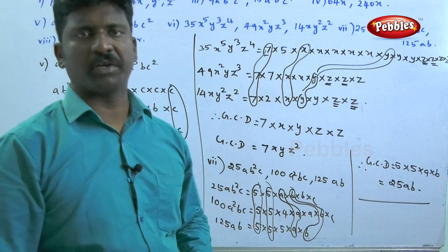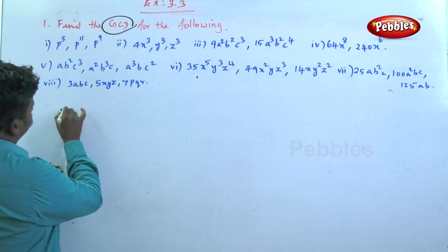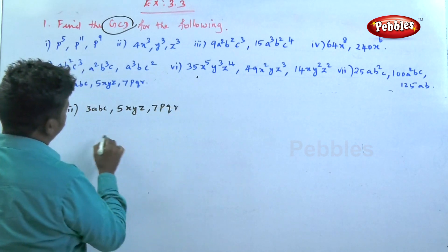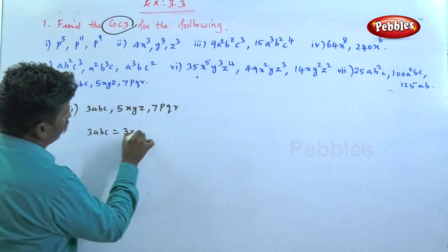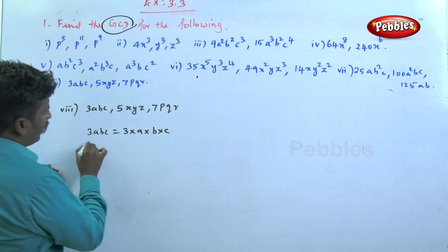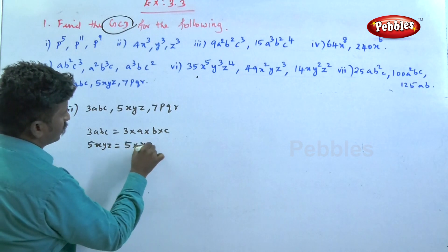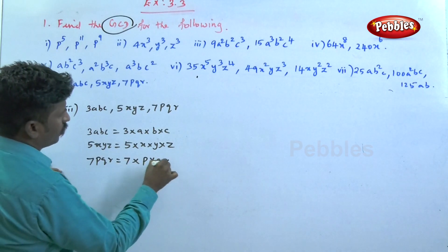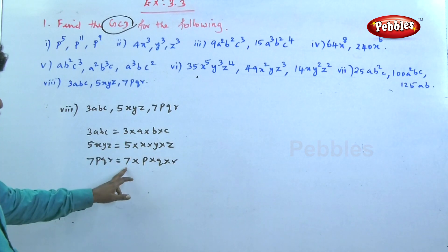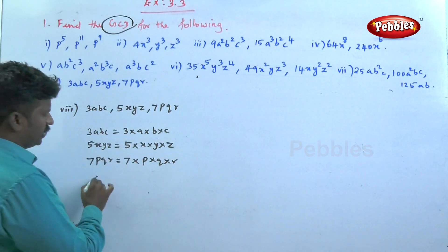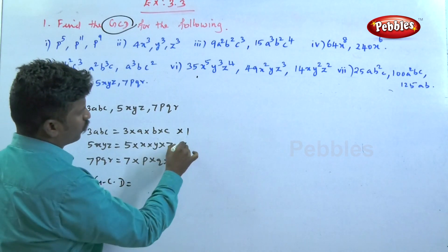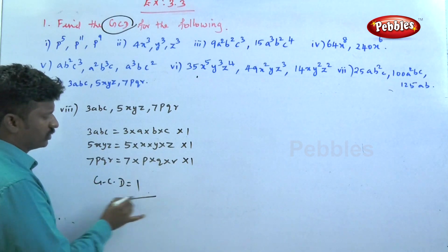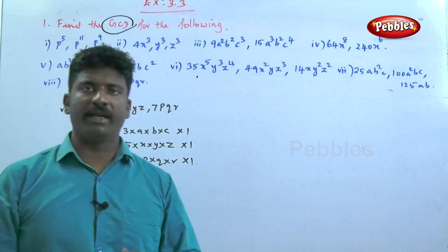The eighth problem: find the GCD of 3abc, 5xyz, and 7pqr. Factorizing: 3abc = 3 × a × b × c; 5xyz = 5 × x × y × z; 7pqr = 7 × p × q × r. There are no common numbers and no common letters at all, so the GCD is equal to 1.